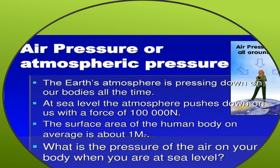Now, what is the atmosphere? We can see that we live at the bottom of an ocean of air, which we call the atmosphere. The earth's atmosphere is pressing down on our bodies all the time. At the sea level, the atmosphere pushes down on us with a force of 100,000 Newton. And the surface area of the human body on the average is about 1 meter square. At the sea level, the weight of air is about 1 kg for every square centimeter, which is roughly equal to the 10 family guards pressing down.